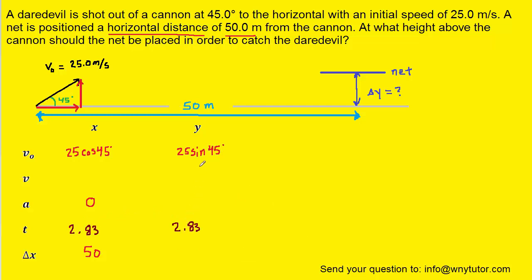Next we'll fill in additional information into the y column. Remember our goal is to find the displacement in the y direction so we'll leave that as a question mark. We also remember that the acceleration in the y direction is indeed negative 9.8 meters per second squared.